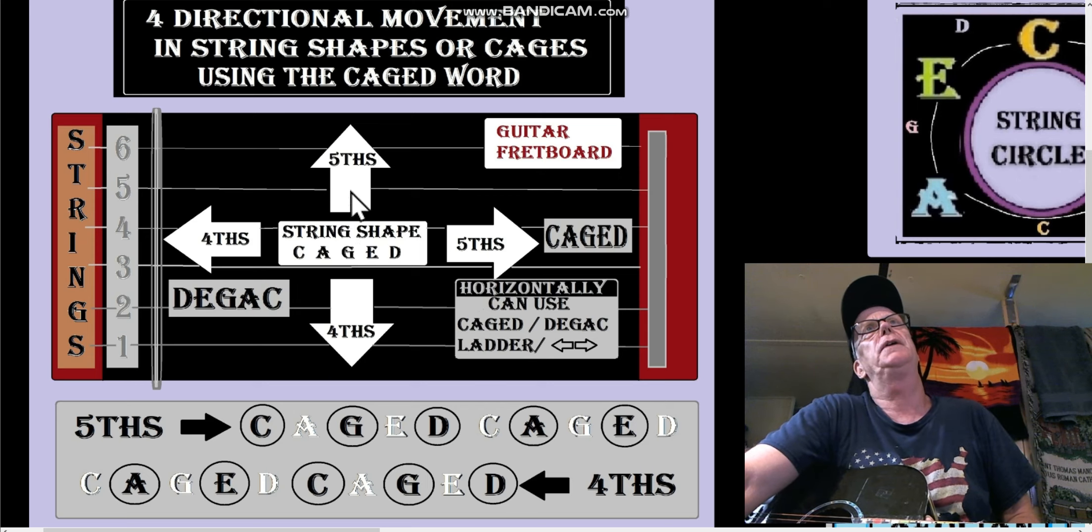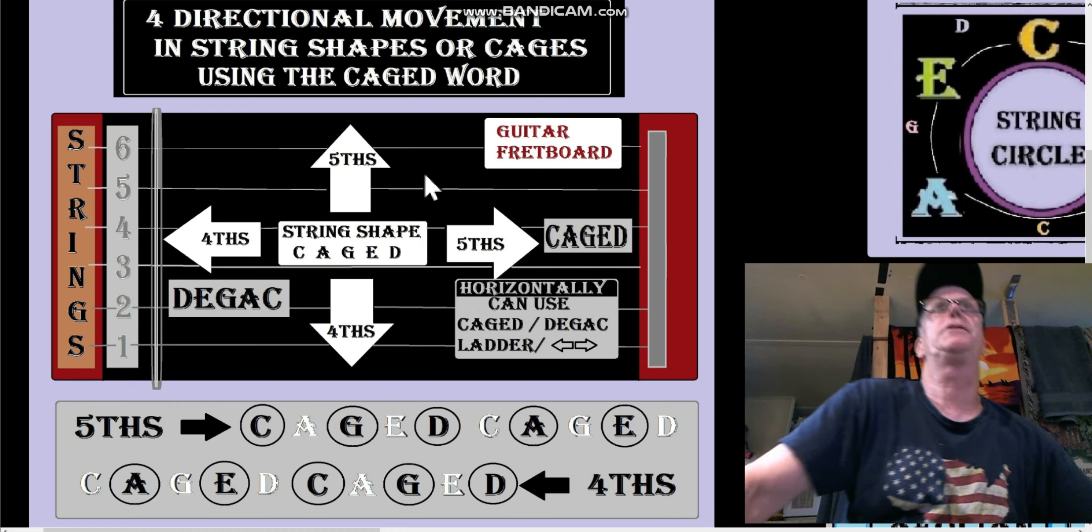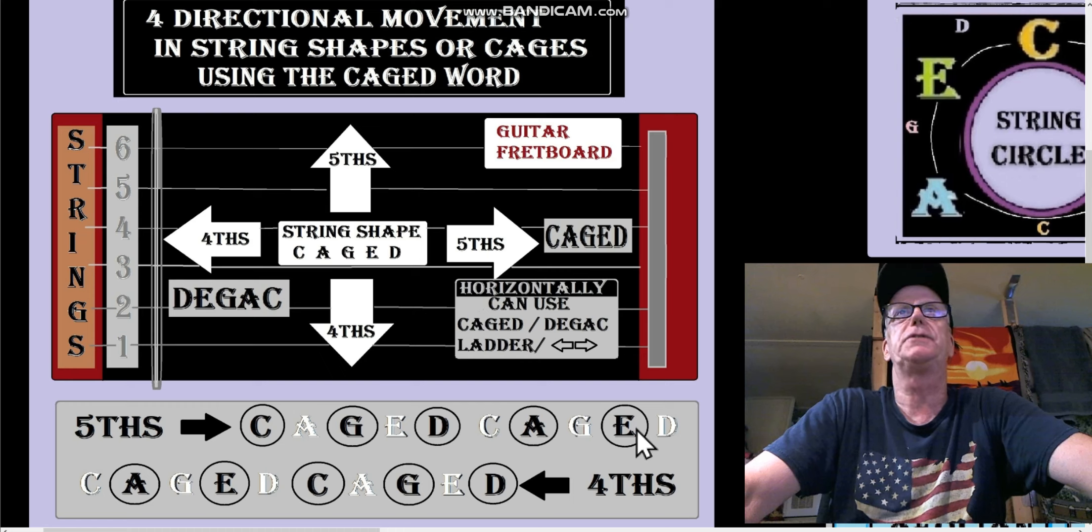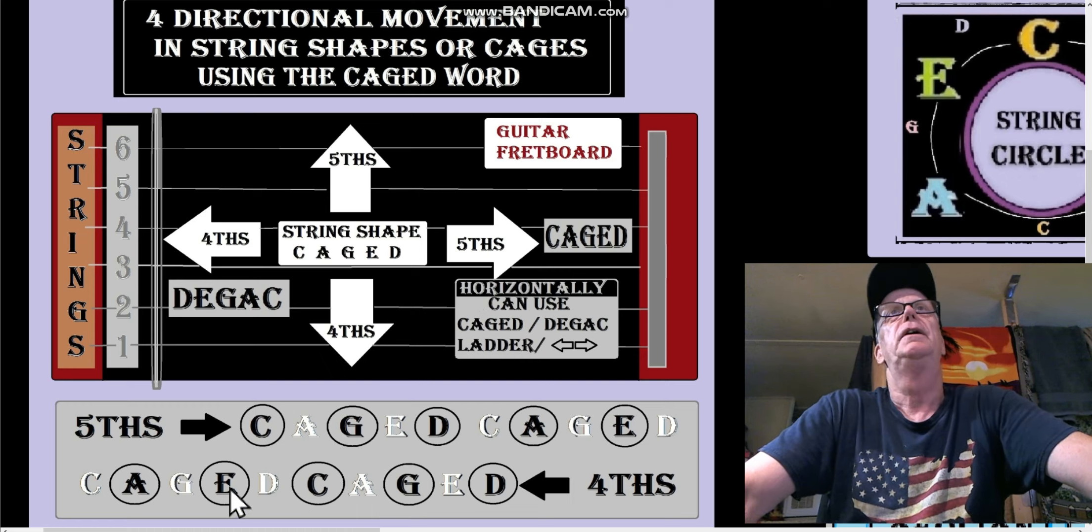This is for the string shapes. I laid this out without doing a lot of playing, but it's important to realize that to go in fifths you take every other letter in the caged word. That solves that augmented diminished problem for you, because E is going to go to C not to B, and going in fourths the other way C is going to go to E not to F.